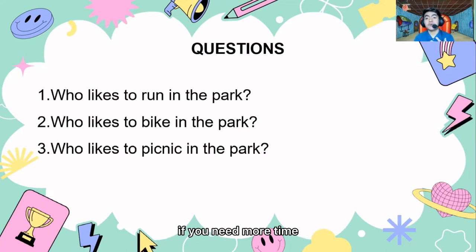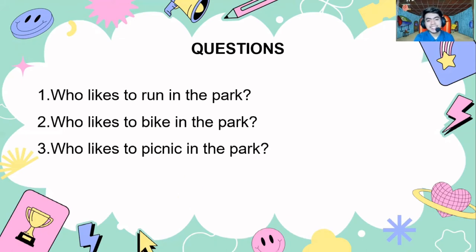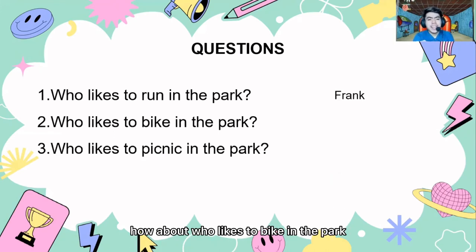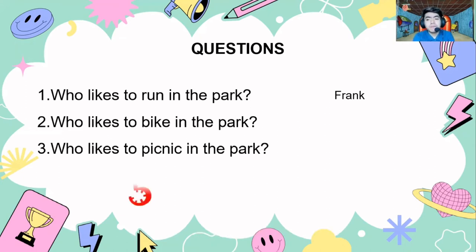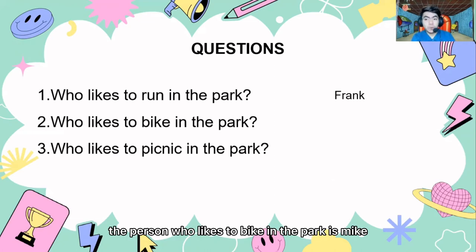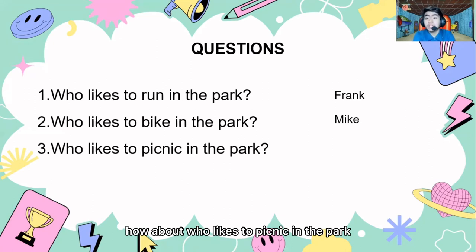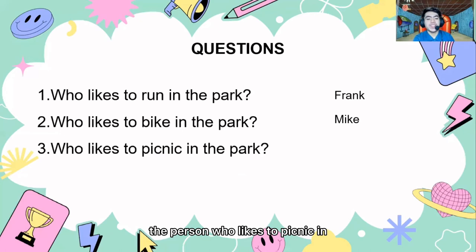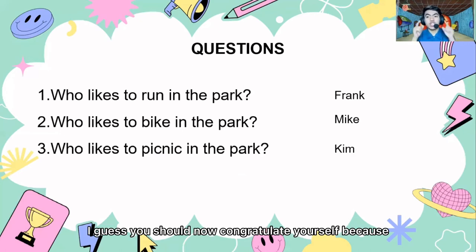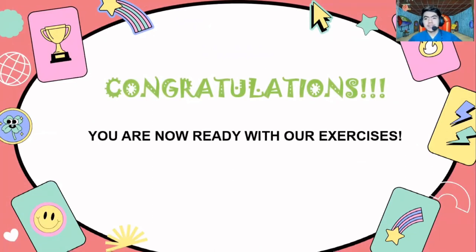Now let's move on with the questions. Just like before, I'll only give you five seconds. If you need more time, just pause the video and play it when you are ready. Who likes to run in the park? You are right — it is Frank. Who likes to bike in the park? The person who likes to bike in the park is Mike. Who likes to picnic in the park? The person who likes to picnic in the park is Kim.